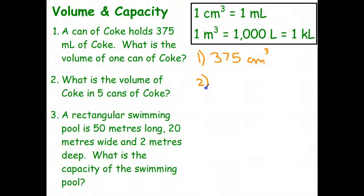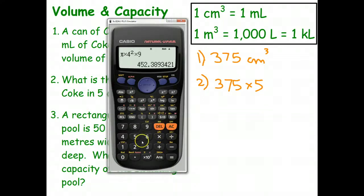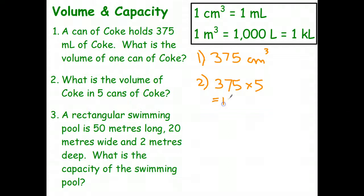Question two. What is the volume of Coke in five cans of Coke? Well, in one can it's 375 cubic centimeters. So just multiply that by five. 375 multiplied by five equals 1,875. We'll leave that as cubic centimeters. When you're looking for a volume, you've got to be working in cubic centimeters, cubic millimeters, or cubic meters - your standard units for volume.